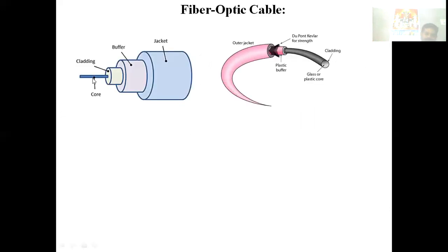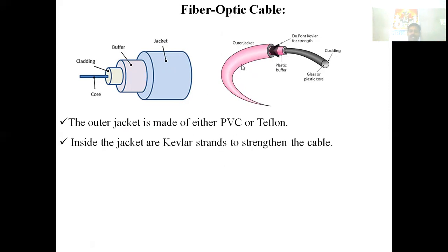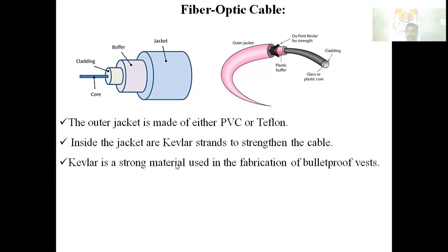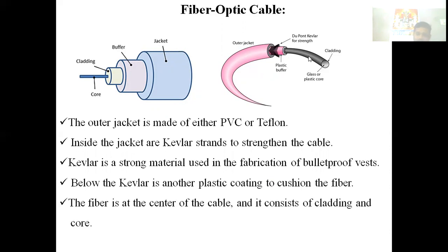A fiber optic cable consists of a core, then cladding, then a plastic buffer, then a Kevlar strand for strength, and an outer jacket made of plastic or Teflon. Light passes through the core by total internal reflection. The core is made of glass or plastic and the cladding surrounds it with a different density.